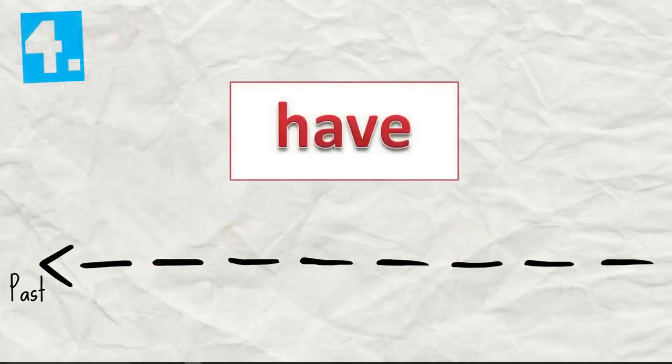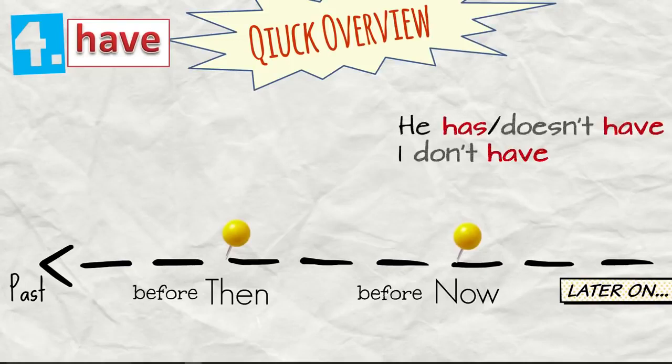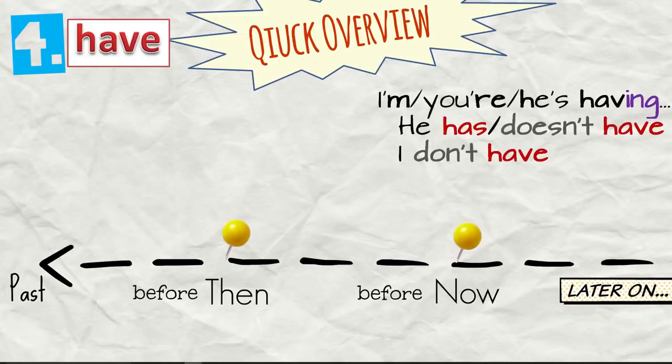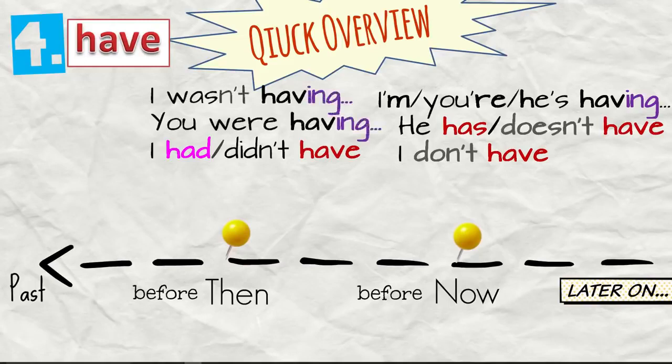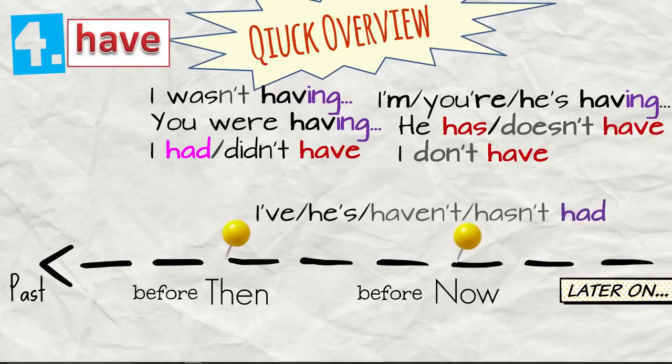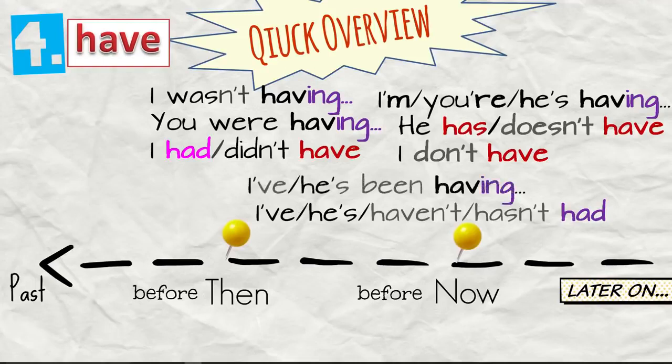Have. Quick overview. He has or he doesn't have. I have or I don't have. I'm having. You're having. He's having. I had or I didn't have. I wasn't having. You were having. I've had. He's had. Or the negative again. I haven't had. He hasn't had. Alright, then we have I've been having or he's been having. And I'd or I hadn't had. I'd been having.